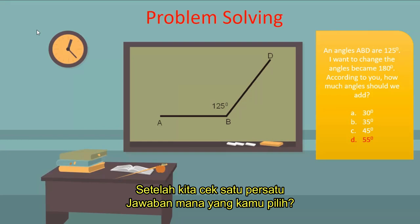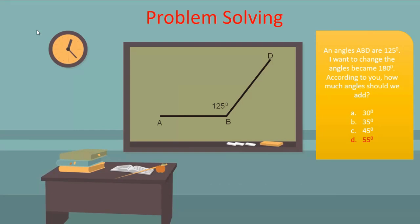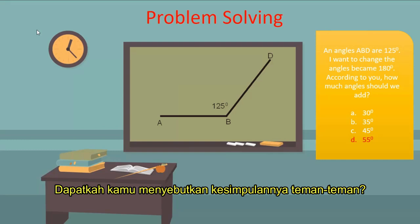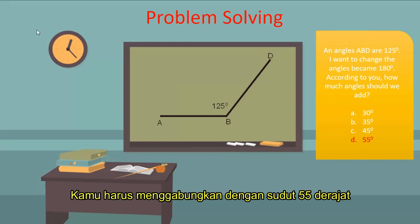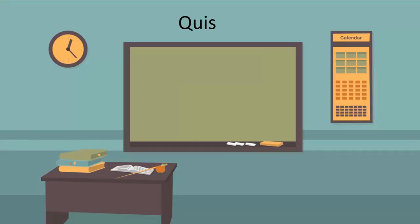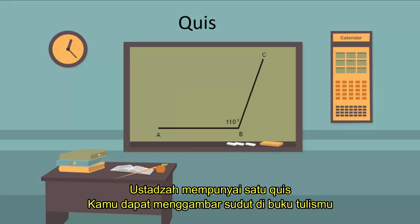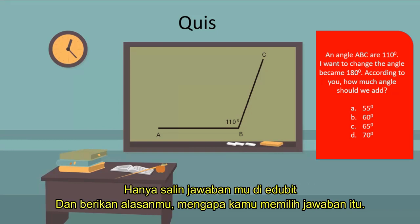After checking each choice one by one, which answer do you choose? That's right — the correct answer is D, 55 degrees. The conclusion is: if you want to make a 125-degree angle become a 180-degree angle, you must combine it with 55 degrees. It's easy! You can draw the three angles in your book, write your answer, and give your reason for why you chose your answer.